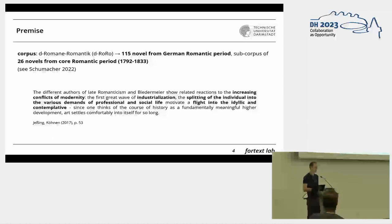If you look at secondary research, they talk about the increasing conflicts of modernity in that period caused by industrialization. Authors like Yesing and Koenig say this is reflected in art and literature through a flight into the idyllic and contemplative. I want to talk about a certain method we developed and show you how we adapted this method to detect conflict.